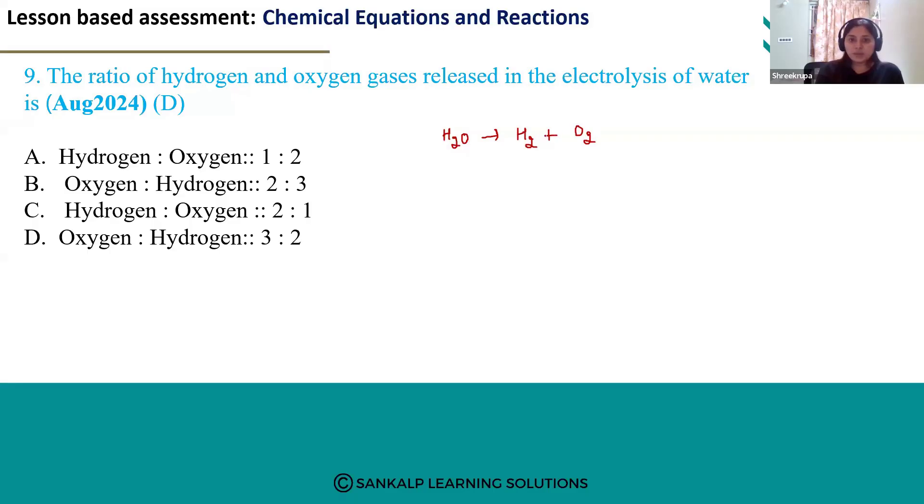If you have to balance the chemical equation, when you balance the equation, you will get two here and two here.